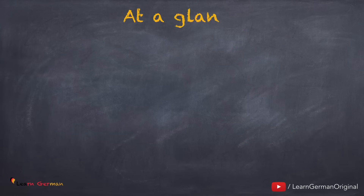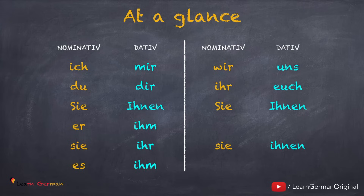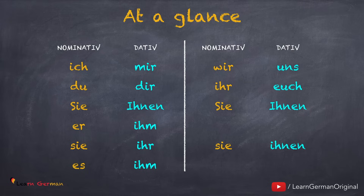Now let's put all of them together. Nominativ → Dativ: ich → mir, du → dir, Sie → Ihnen, er → ihm, sie → ihr, es → ihm, wir → uns, ihr → euch, Sie (formal plural) → Ihnen, sie (third person plural) → ihnen.